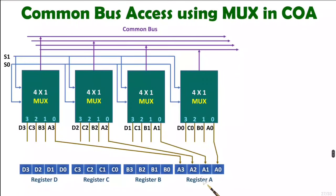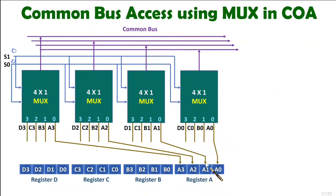I need to select register A first. With this multiplexer, we have a common selection line. With the 0th input of this multiplexer, register A is connected. So when S1 S0 is 0,0, the 0th input will get selected. You see A0 is the 0th bit of register A, A1 is the first bit, A2 is the second bit, and A3 is the third bit of register A — these will come on the output. So this common bus will carry A0, A1, A2, and A3 data.